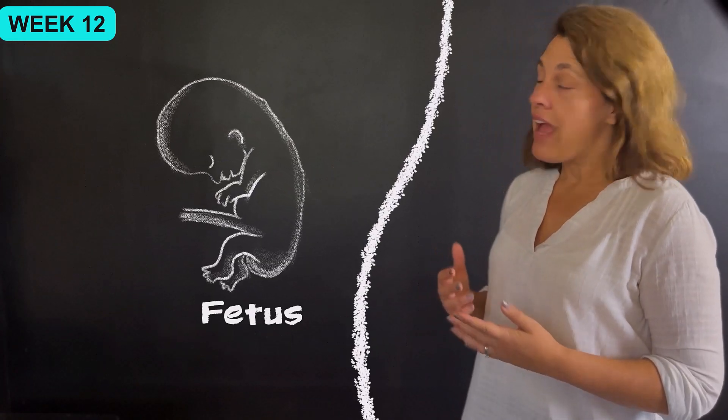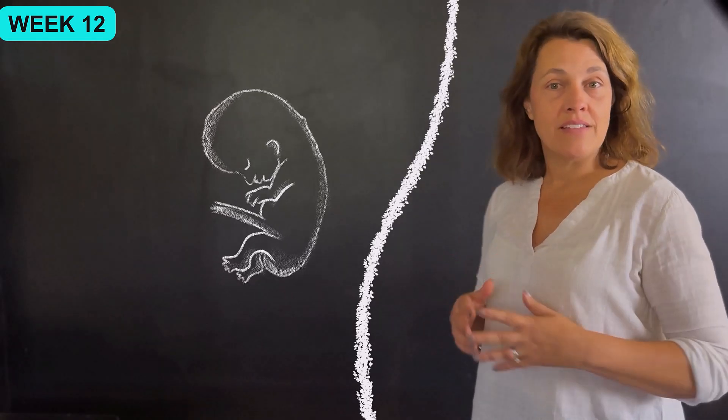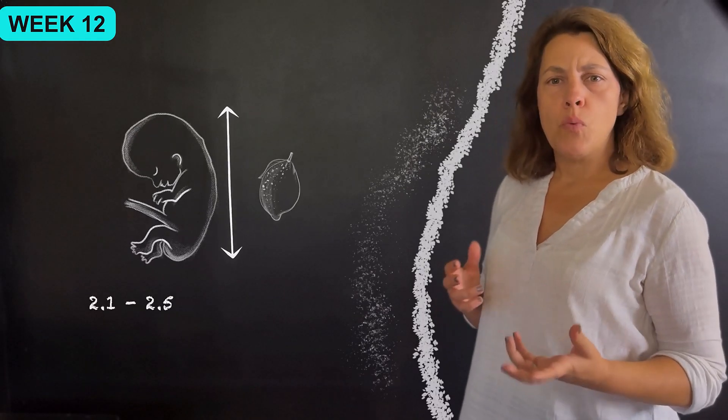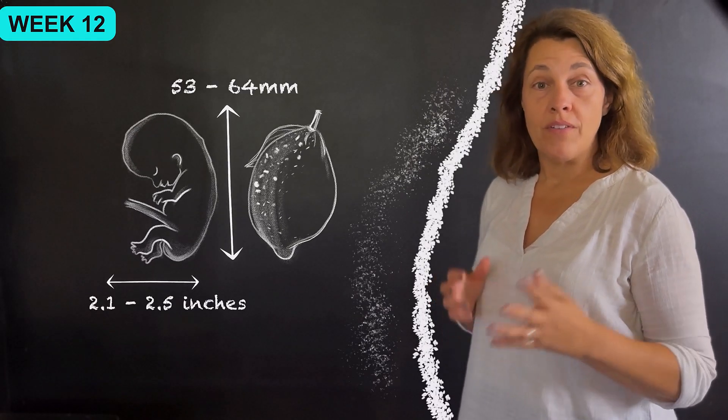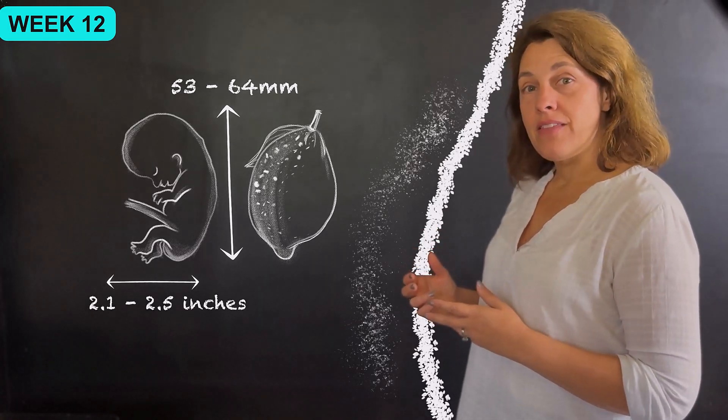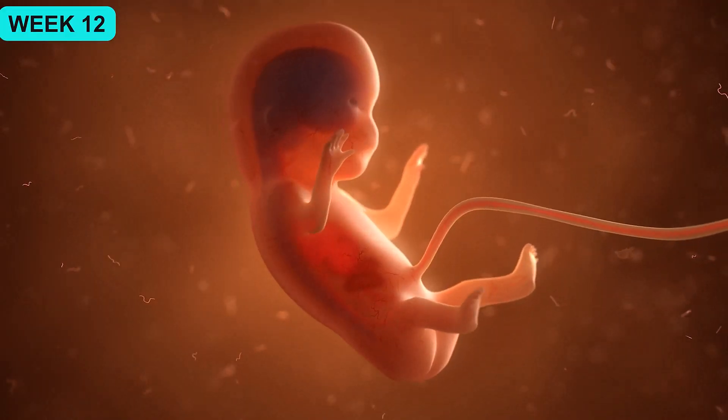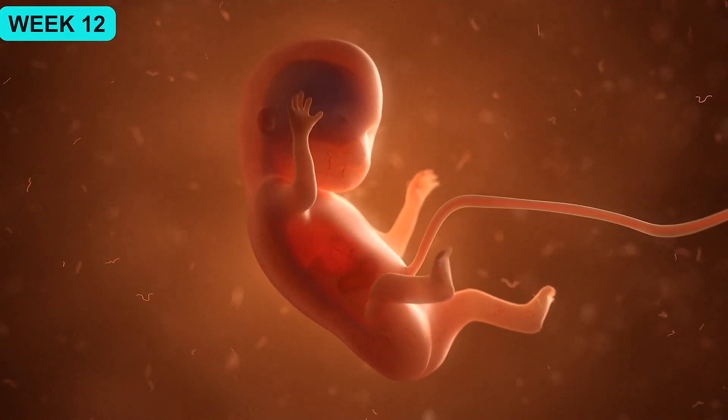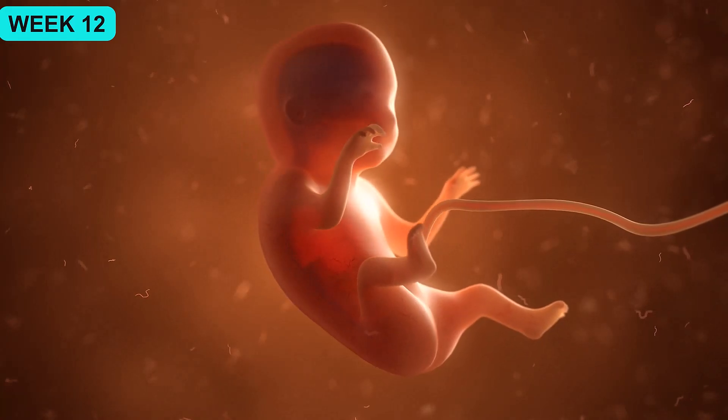The baby, which is called a fetus at this point, is measuring about the size of a lime. So that's 2.1 to 2.5 inches or 53 to 64 millimeters in length. At 12 weeks of pregnancy, the baby's bones begin to harden and their tooth buds continue to form, which will become baby's teeth.